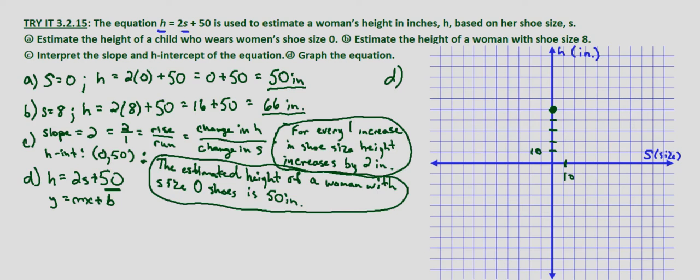We already have one point, we have our h intercept. In order to graph we'll use a couple more points. Since we have the equation in slope intercept form we could use rise over run because we know our slope is 2, but I'm going to plug in points because our scale would make it hard to go up two and over one. So what I'm going to do is plot a few points based on h and s. We already know we've got one point when shoe size is 0.